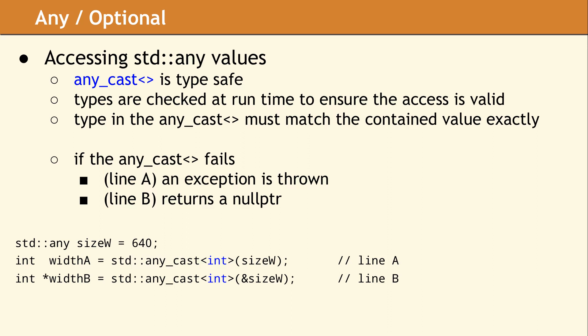The most common usage is shown on line A, and this will throw an exception if the check fails. Alternately, you can use the form on line B, which will return a null pointer if the check fails. Since the value contained in the variable size w happens to be an int, both of these casts will succeed.